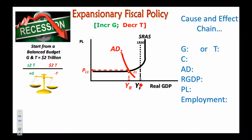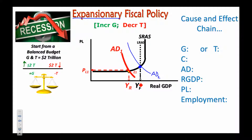First, let's quickly go through what we mean by fiscal policy. In a recession, we use expansionary fiscal policy — we want to find a way to expand the economy so the aggregate demand curve shifts to the right and creates a new equilibrium at the full employment level. To do that, assuming we start from a balanced budget, we increase government spending and/or decrease taxation, so government spending becomes greater than tax revenue.